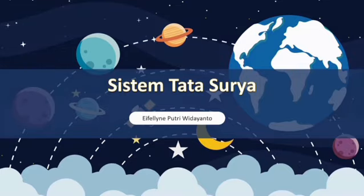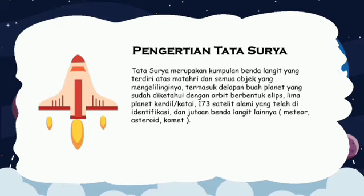Sistem Tata Surya. Pengertian Tata Surya: Tata Surya merupakan kumpulan benda langit yang terdiri atas matahari dan semua objek yang mengelilinginya, termasuk 8 buah planet yang sudah diketahui dengan orbit berbentuk elips, 5 planet kerdil atau katai, 173 satelit alami yang telah diidentifikasi, dan jutaan benda langit lainnya seperti meteor, asteroid, dan komet.